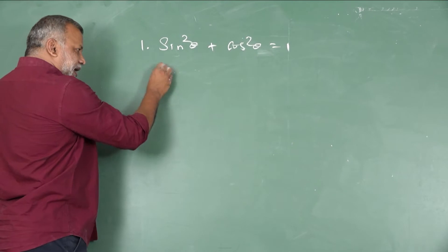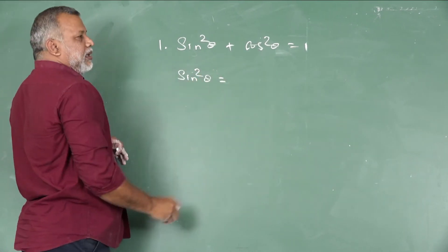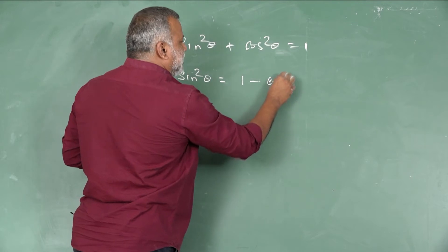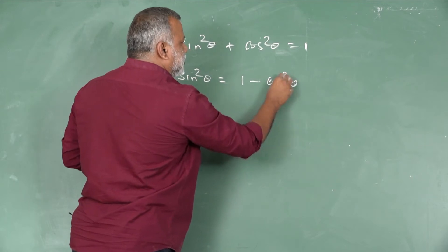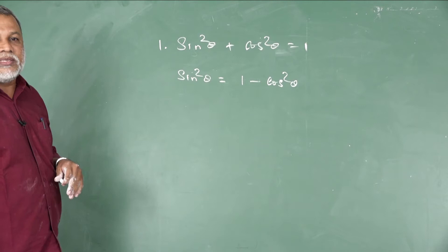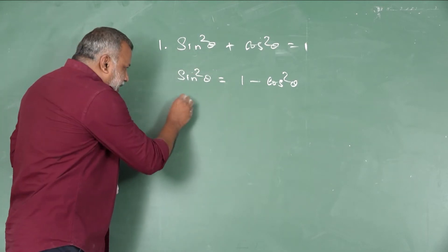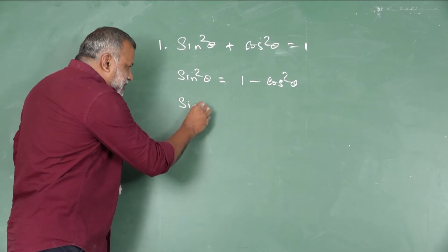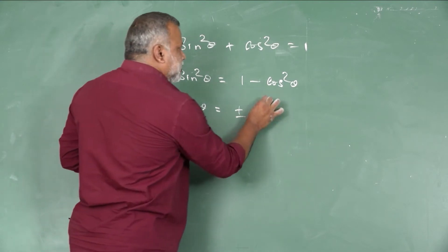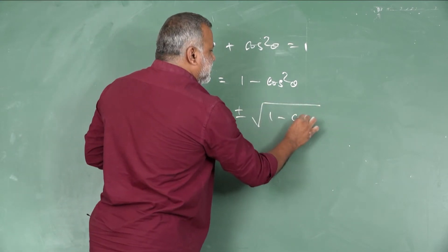sin²θ = 1 − cos²θ. From this we are able to derive: sin θ = ±√(1 − cos²θ).